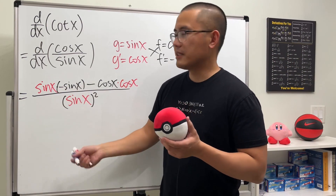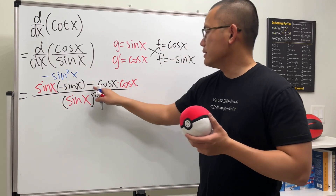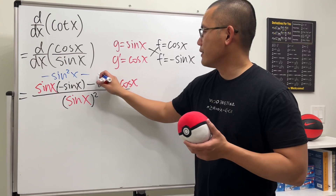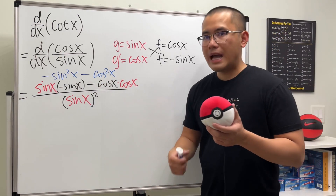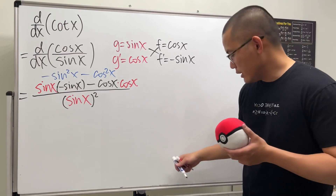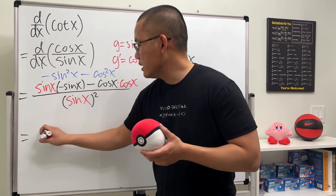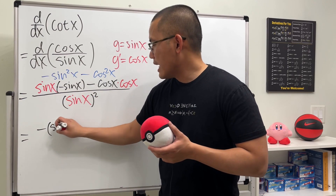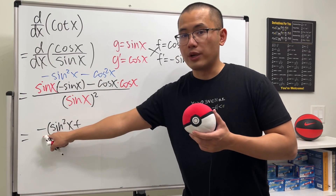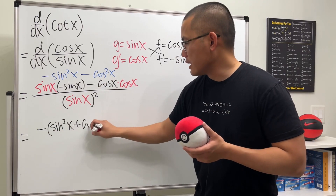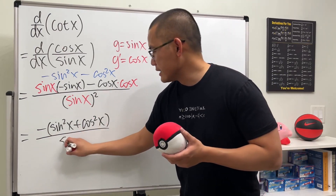Sine x times sine x — that's negative sine squared x. So let me just write that down. And then this is negative, and then we have cosine squared x. Both of them have a negative, so we can factor that out. So we are going to see that this is just going to be negative, with parentheses, and we have sine squared x plus cosine squared x, all over sine squared x.